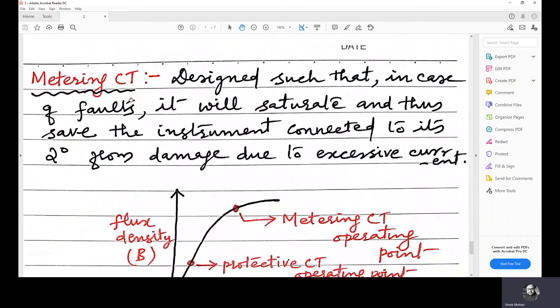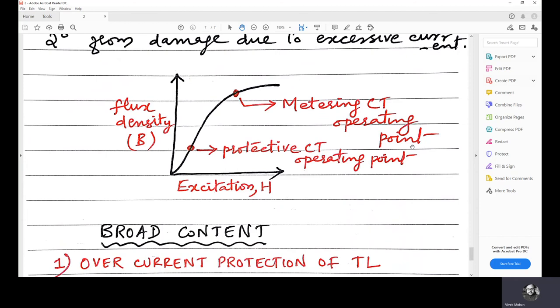Now, metering CT. What is metering current transformer? Metering current transformer is designed such that in case of faults, that means the primary current is very high, it will saturate. If the device saturates, that means IE value will be very high and I dash that is seen by the metering instrument will be very small. That is what is the purpose here because the metering instrument should not carry a high current. So, the device basically, basically the device should operate in the saturation region. So, thus save the instrument connected to its secondary from damage due to excessive current. So, we will see the BH curve. In the BH curve, the metering CT's operating point is in this region, that is in the saturation region.